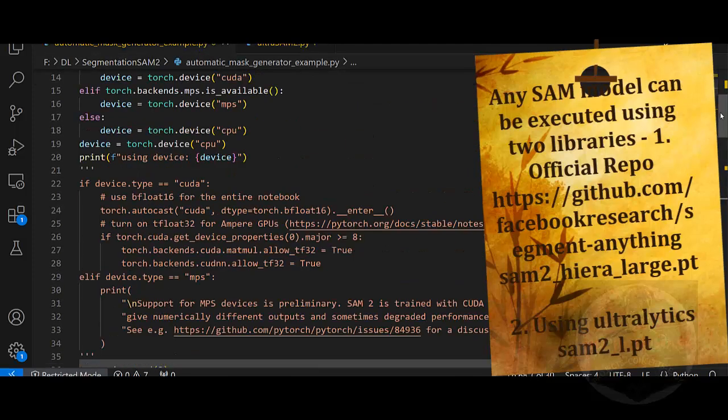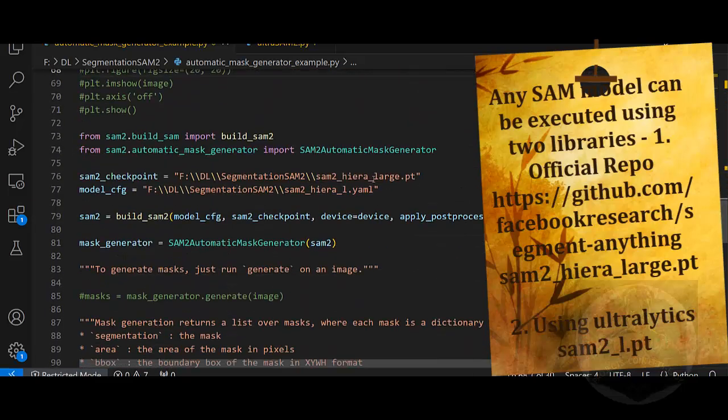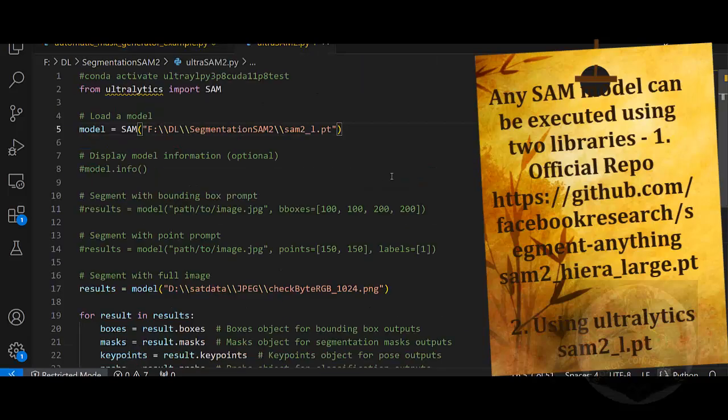I want to reiterate that you can execute the same model with Ultralytics as well as with the native repository, so you have to download the weights accordingly. SAM comes in various models - as a large model, as a base model, or as a small model. Basically small or tiny models are mainly for embedded devices where large models are for high-end GPUs. These results are through large model. This is the checkpoint I have downloaded from the repository on the native repository of SAM.